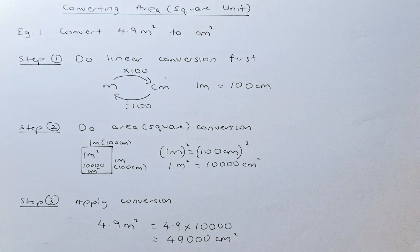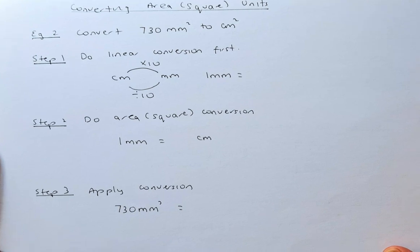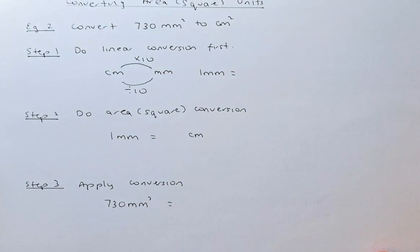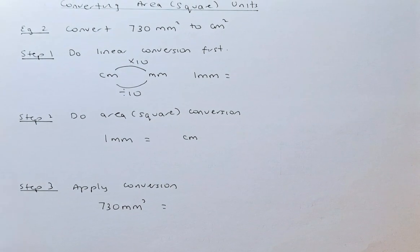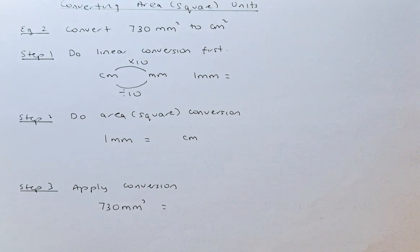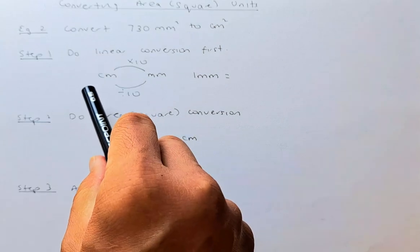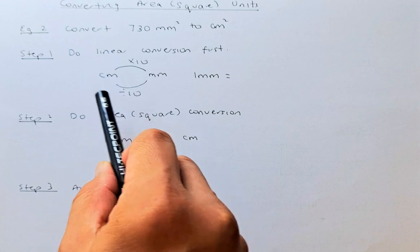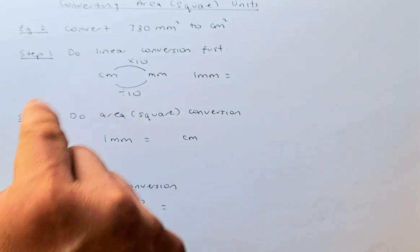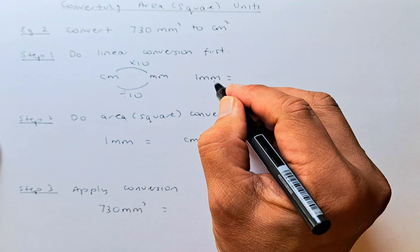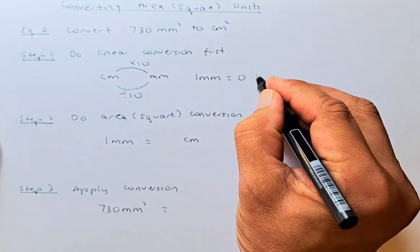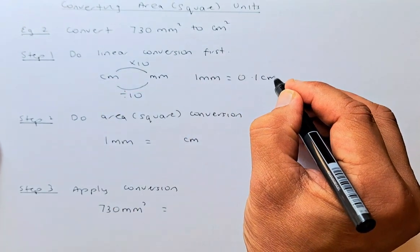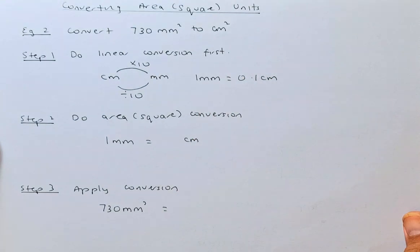So that is how you convert a square unit. Now we shall do a second example — how to convert 730 millimeter squared to centimeter squared. Centimeter to millimeter, you multiply by 10. Millimeter to centimeter, you divide by 10. So we are millimeter and we are going to convert to centimeter. You take 1 millimeter, divide by 10, and you get 0.1 centimeter. That is the first step — you do a linear conversion.